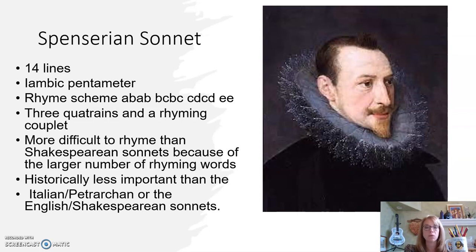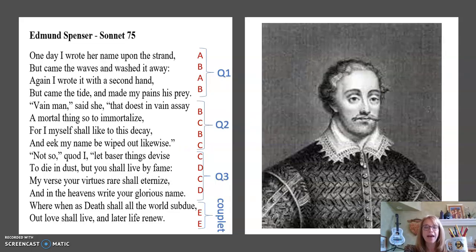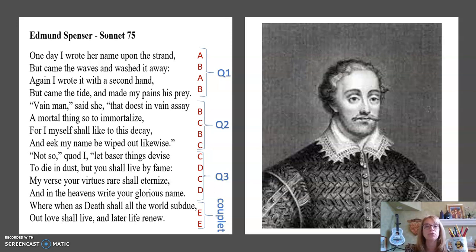It's also historically less important than the Italian Petrarchan or English Shakespearean sonnet — but that's okay, Spencer, we still like you. In fact, here is a very famous poem written by Edmund Spencer: 'One day I wrote her name upon the strand.' I'll do an analysis of this poem in another video on my YouTube channel, One Lit Teacher. Here's the rhyme scheme marked: A-B-A-B, B-C-B-C, C-D-C-D, E-E.